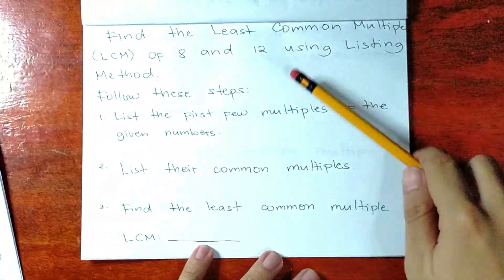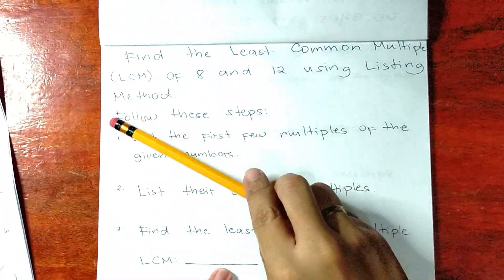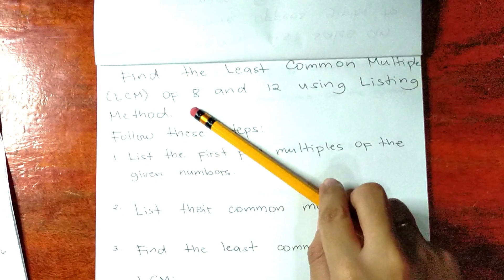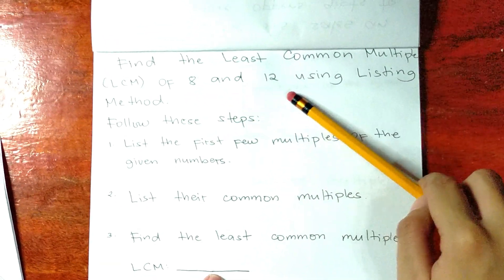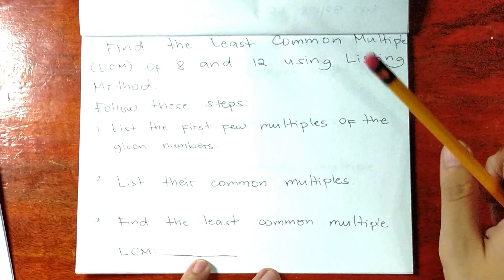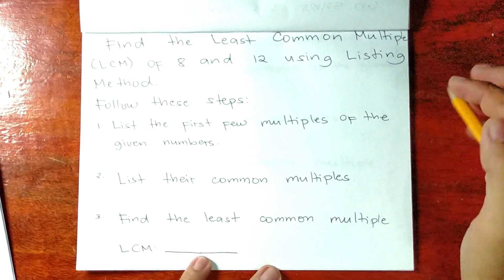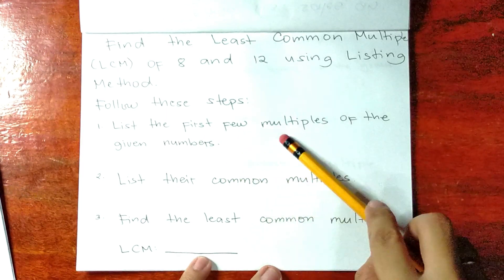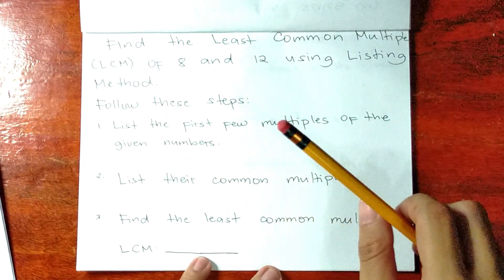So to answer the problem, let's find the least common multiple or LCM of 8 and 12 using listing method. Let's follow these steps. Step 1: List the first few multiples of the given numbers.